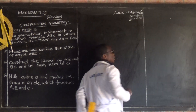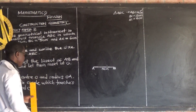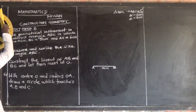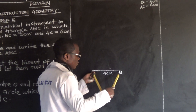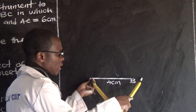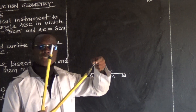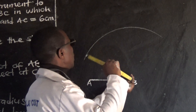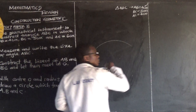Okay, that's done. Now BC is 5 centimeters. I'm going to use my compass to come up with BC. I've measured using my ruler and this is my 5 centimeters. So I'm going to put the point of my compass at B, and then I'm going to strike an arc. This is my arc of 5 centimeters.